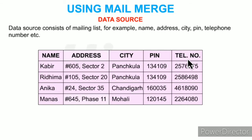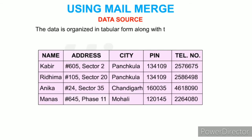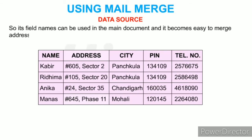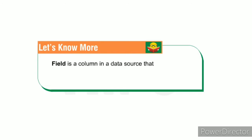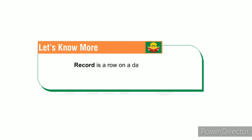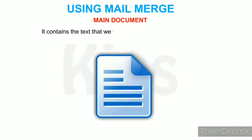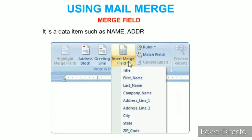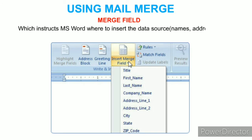The data source consists of a mailing list — for example, name, address, city, pin, telephone number, etc. — organized in tabular form with field names. A field is a column in a data source containing one type of information, such as name or city. A record is a row on a data sheet; a number of fields make one record. The main document contains the text to send to all recipients. A merge field is a data item such as name, address, or city which instructs MS Word where to insert the data source information.